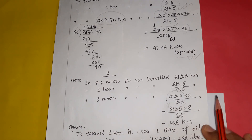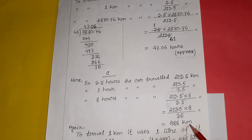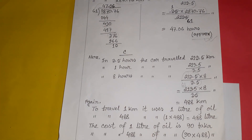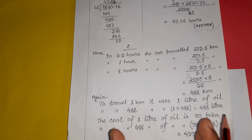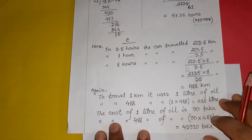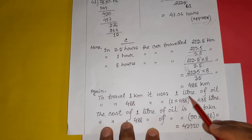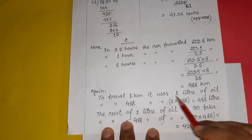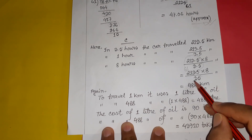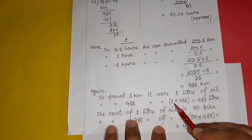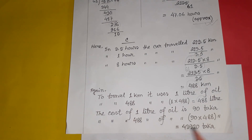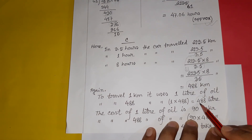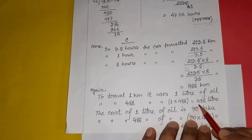In 8 hours the car travels 488 kilometers. The relationship is that 1 kilometer requires 1 liter of oil. So to travel 488 kilometers, the car uses 488 liters of oil. Therefore in 8 hours the car uses 488 liters of oil. That completes the second step of solving question three.